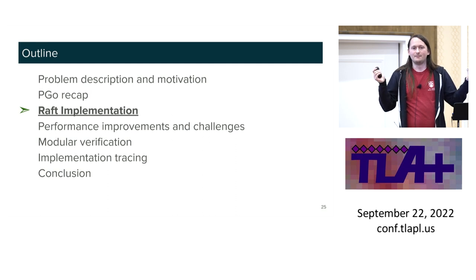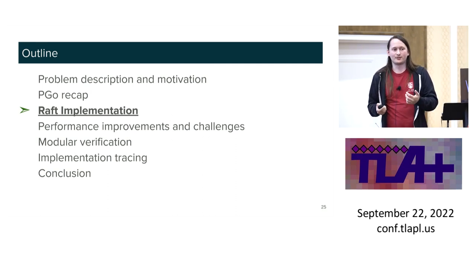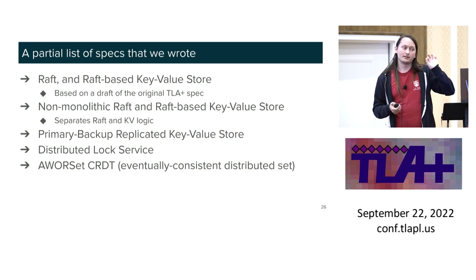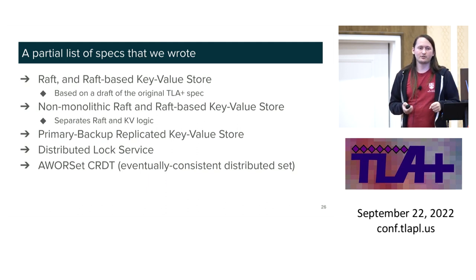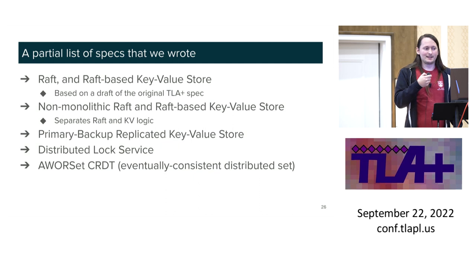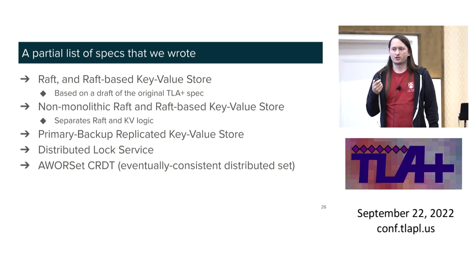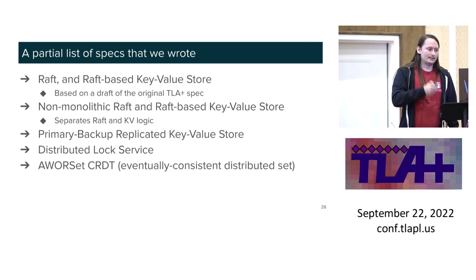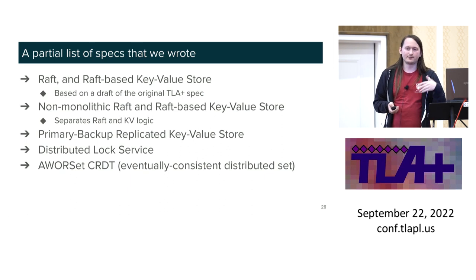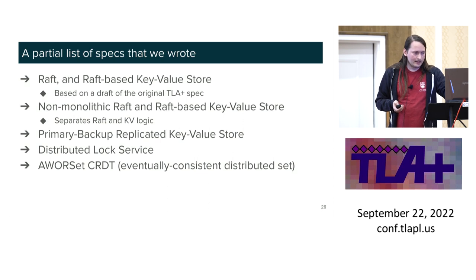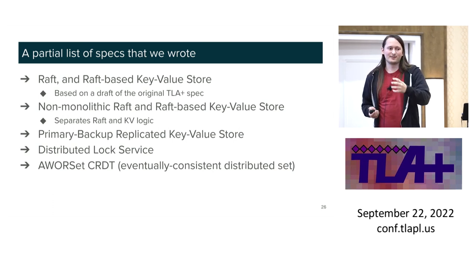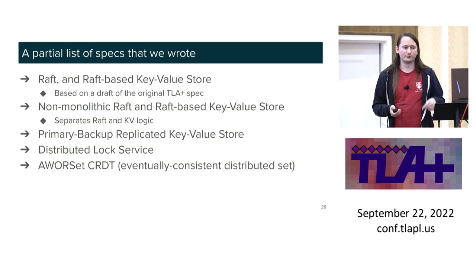Now our bigger, better systems. This might not be super impressive to production folks, but it's a huge step up from our original toy example. We've got a Raft-based key-value store — think etcd or comparable systems with consensus, keys, and values. We also have a non-monolithic version to showcase modularity. We have a primary-backup key-value store with a different architecture, a distributed lock service one of our interns did, and an eventually consistent distributed set — just to show that our implementations don't have to be high-consistency traditional systems.